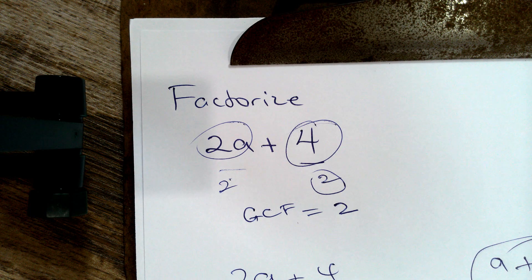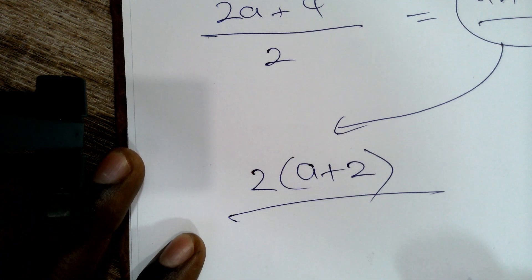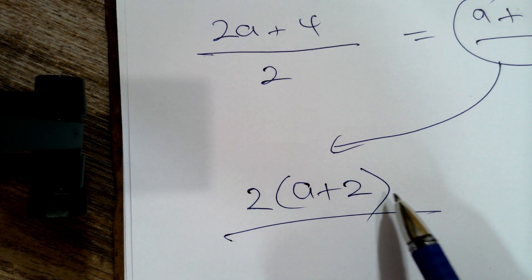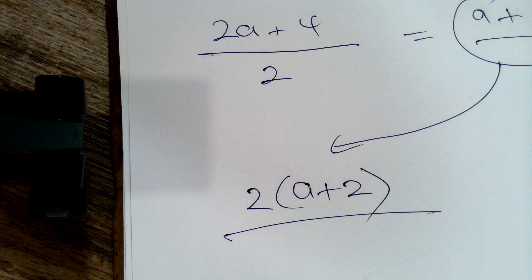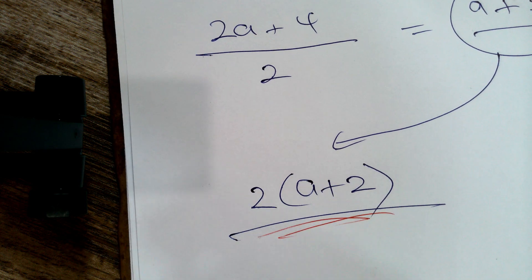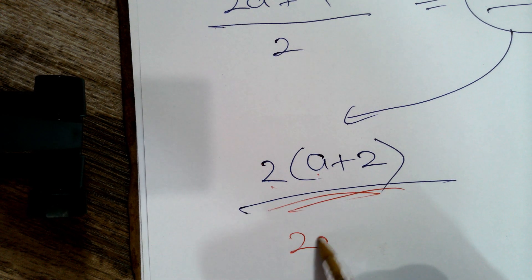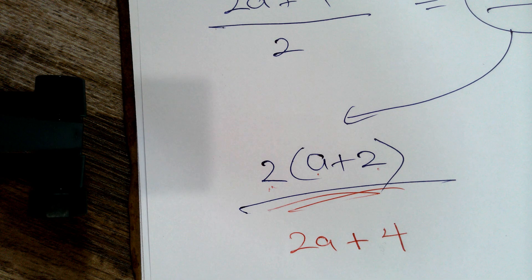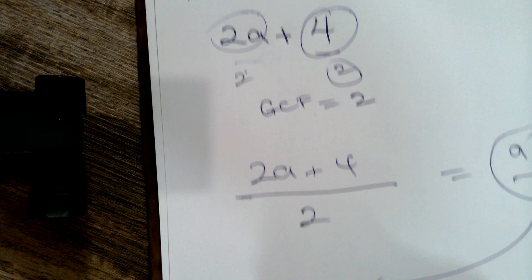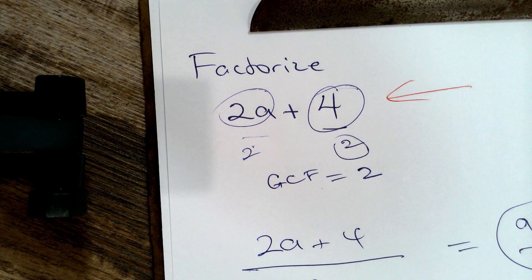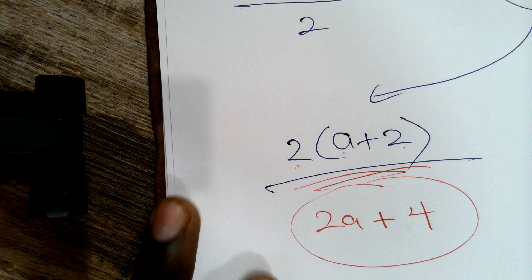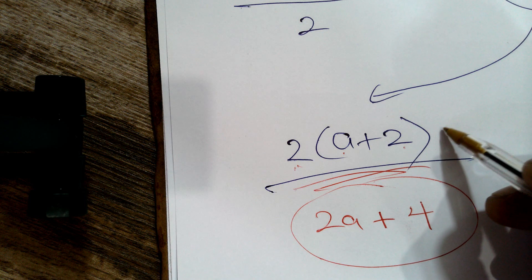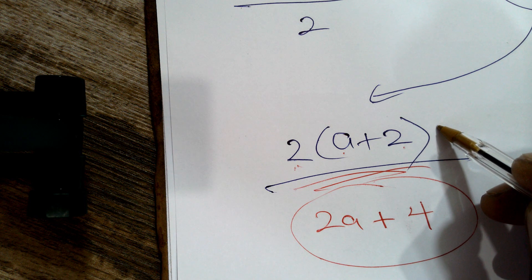So after factorization, our answer is: 2a plus 4 equals 2 outside the brackets, and a plus 2 inside the brackets. We double-check by expanding: 2 multiplied by a gives us 2a, plus 2 multiplied by 2 gives us 4, which is our original expression of 2a plus 4.